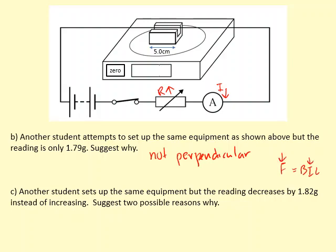Another student sets up the same equipment, but the reading decreases by 1.82 grams instead of increasing. Just two possible reasons why. Well, if the reading is decreasing, now the force isn't downwards on the magnet anymore. The magnet is being pulled upwards. Now that means that the wire is being pulled downwards. So why has the direction of the force on the wire changed?